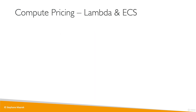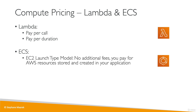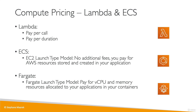Next we have Lambda and ECS in the compute category. For Lambda, you pay per API call and per duration of your Lambda functions times the amount of RAM assigned. For ECS with the EC2 launch type, there are no fees for using ECS itself, but you pay for the underlying EC2 instances. For Fargate, since you don't manage EC2 instances, you pay per container based on the CPU and memory assigned.